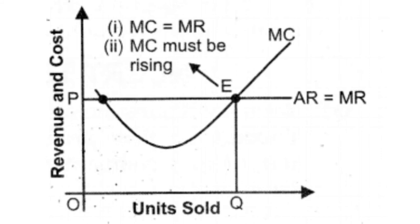In the figure, output is shown on the horizontal axis and revenue and cost on the vertical axis. The producer sells Q units. Equilibrium will be determined at OQ in this diagram, at the level of output corresponding to point E, because at this point the following two conditions are met: first, marginal cost equals marginal revenue; and second, the marginal cost curve cuts the marginal revenue curve from below.